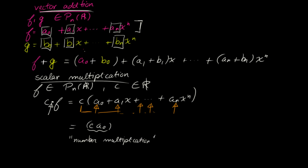And what I'm left with is really c times a_0, and now this is number multiplication over R. And similarly here, this is addition over R, right? Because both of these belong to the real numbers. So you have plus c times a_1 times x, and so on, until c times a_n times x^n. So that's how we typically define vector addition and scalar multiplication in P_n(R).